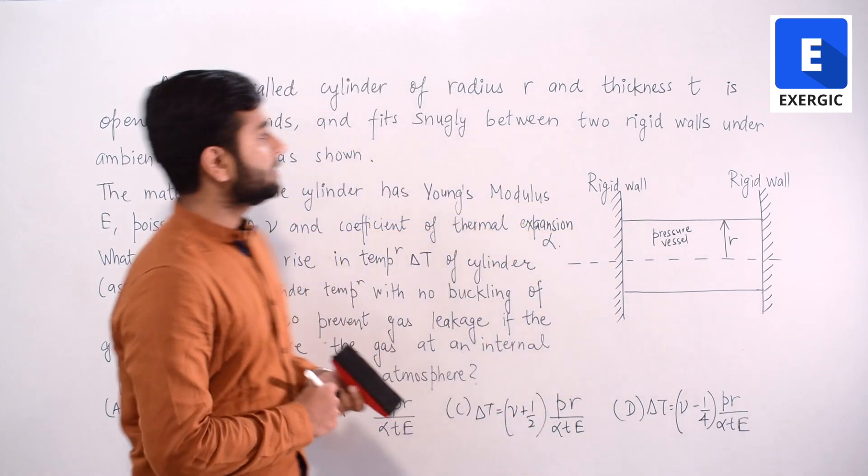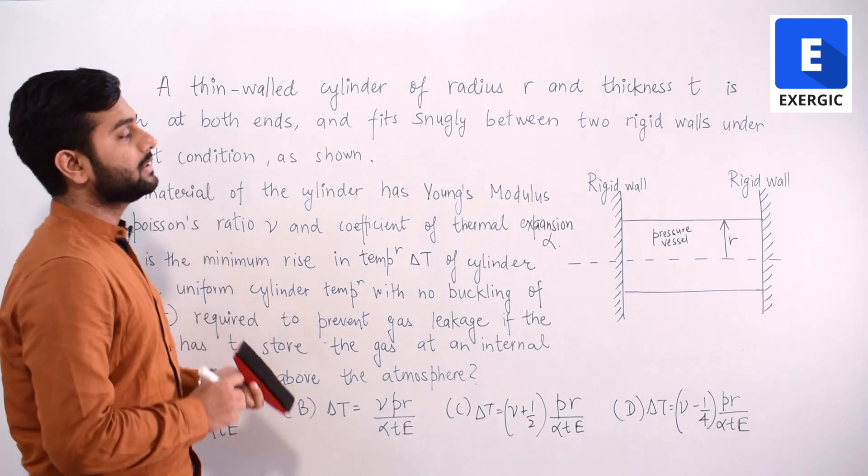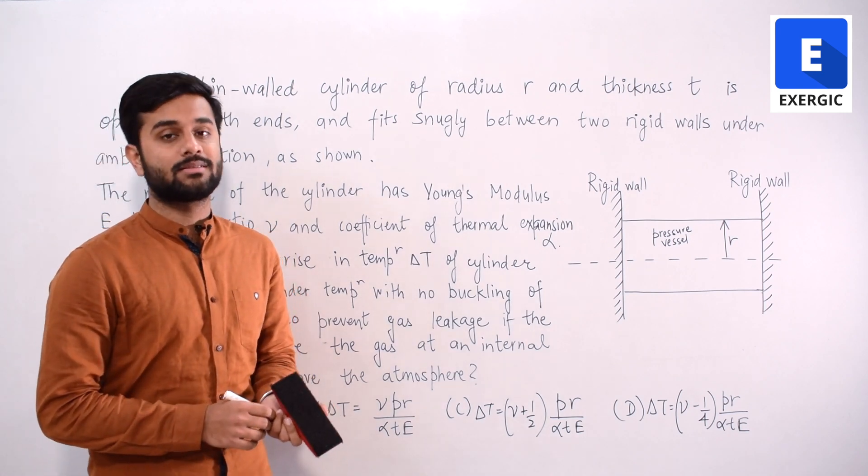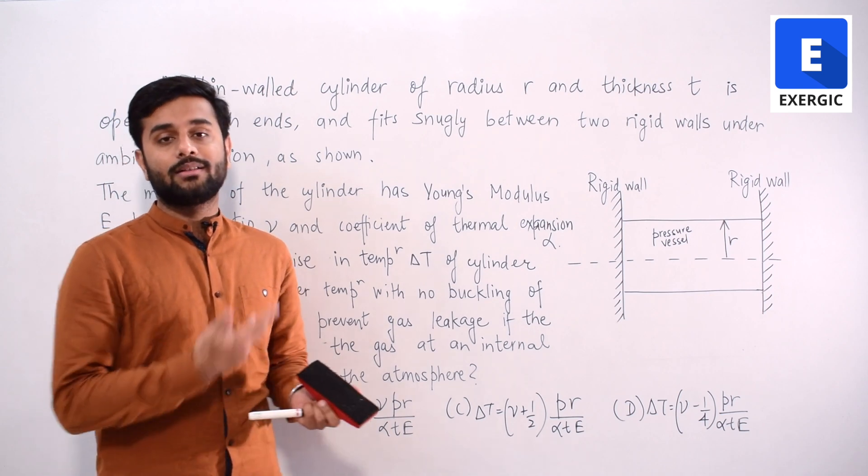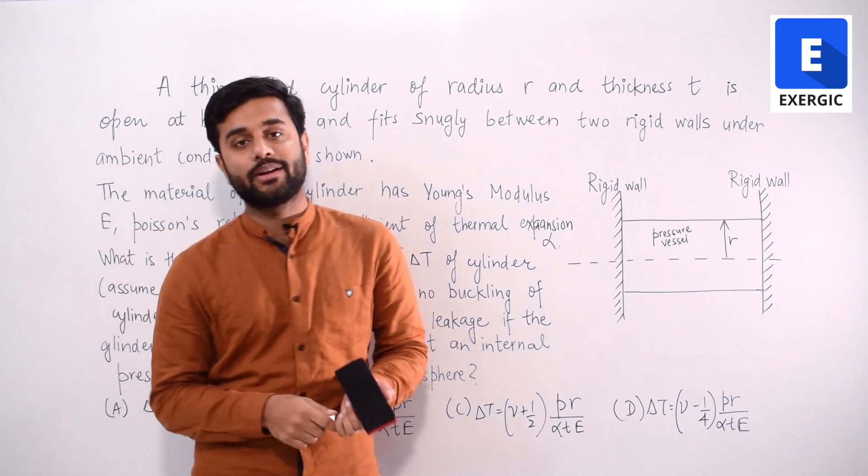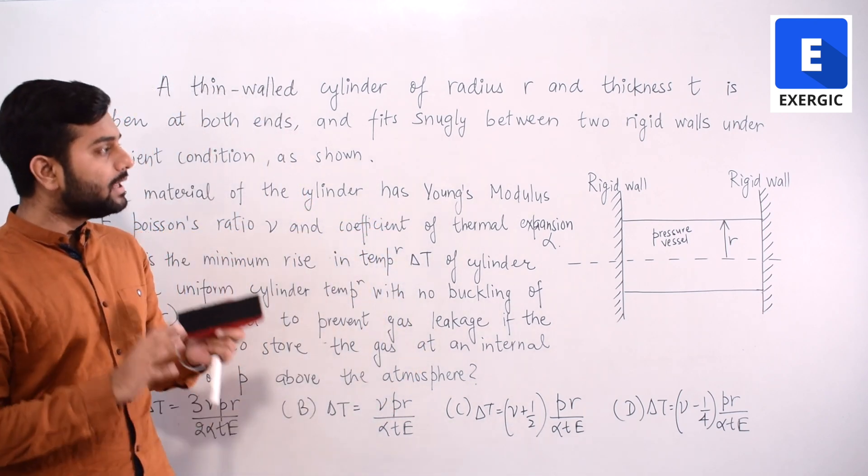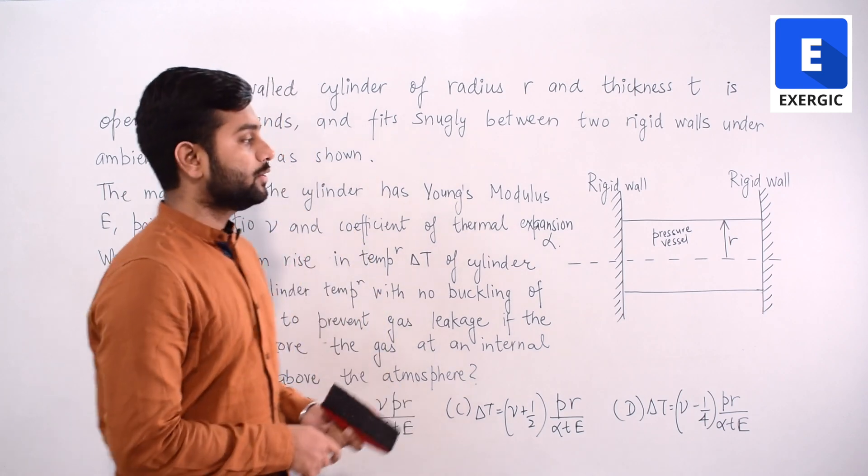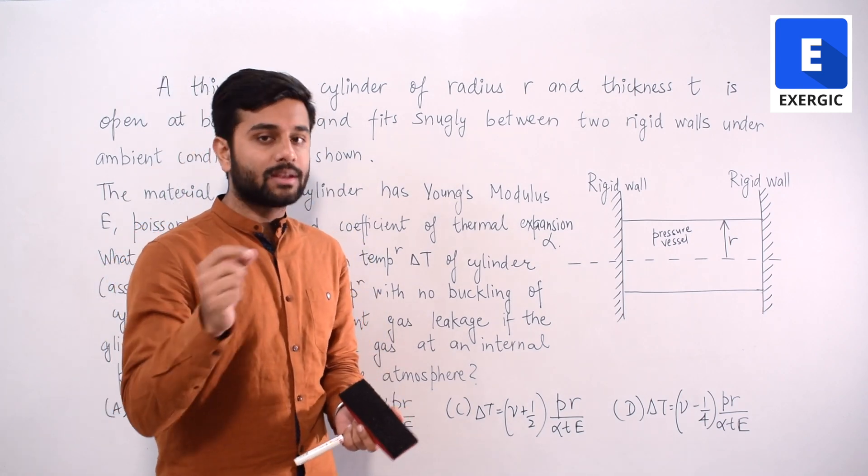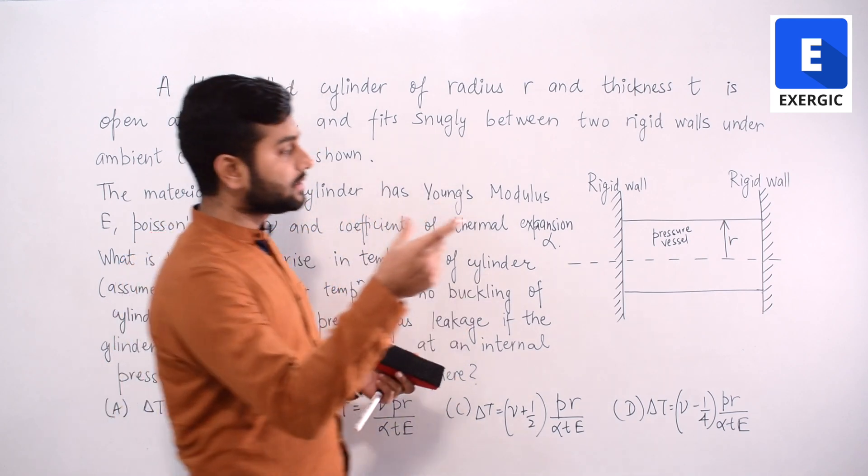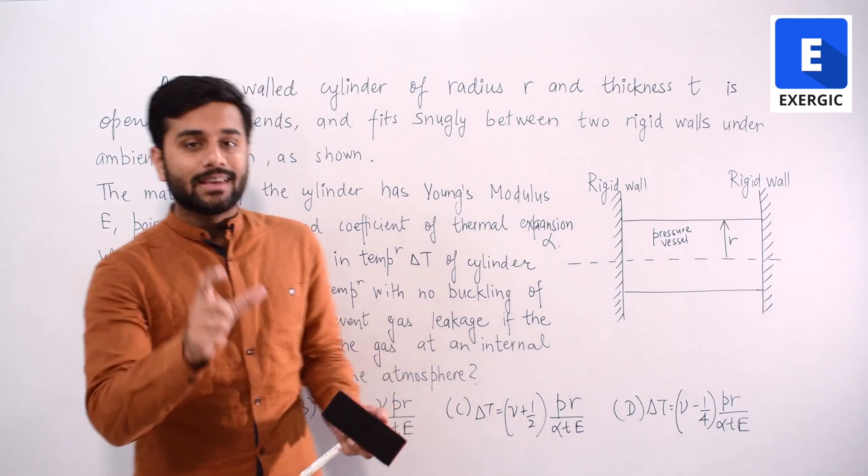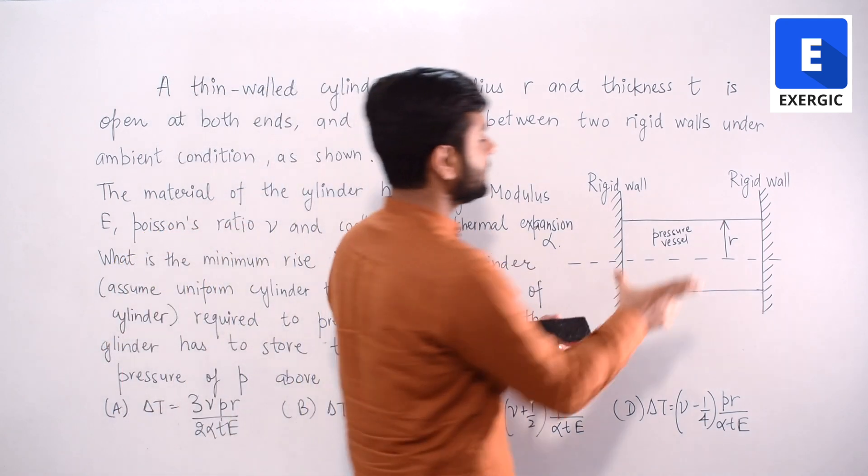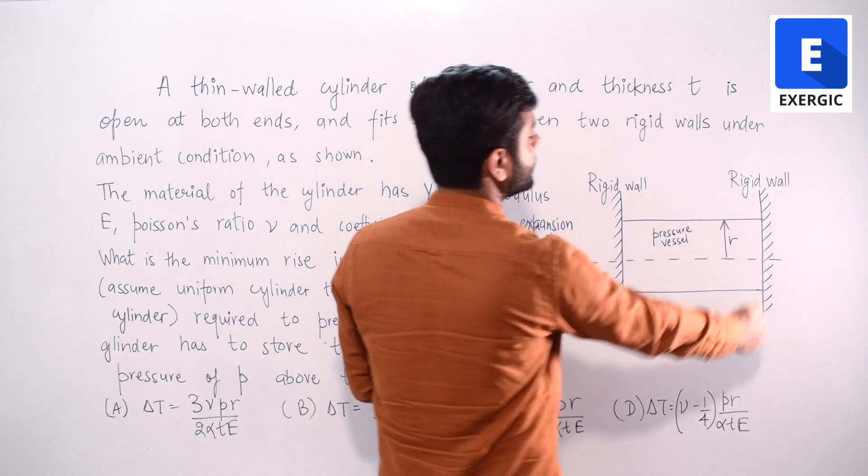The question says that a thin-walled cylinder of radius r and thickness t is open at both ends. Generally whatever pressure vessels we see in the equations are closed at both ends, but it is open at both ends, totally hollow. And it fits snugly between two rigid walls under ambient condition as shown - easily without applying force but without any gap. You can say it fits perfectly into the gap between two rigid walls.